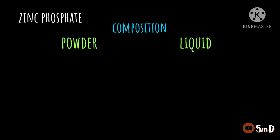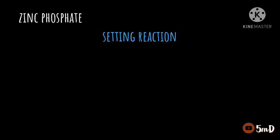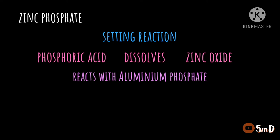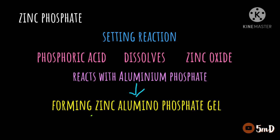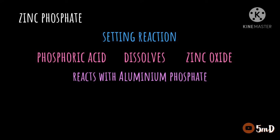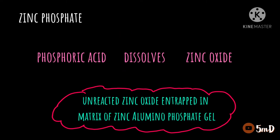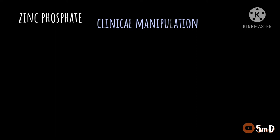Now let us see the setting reaction of zinc phosphate cement. When the phosphoric acid (the liquid) is mixed with the powder, the phosphoric acid dissolves the zinc oxide and reacts with the aluminium phosphate to form a zinc aluminophosphate gel. This gel forms a casing over the unreacted zinc oxide particles, so the set cement contains unreacted zinc oxide particles enveloped in an amorphous matrix of zinc aluminophosphate gel.